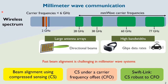Radios in 5G and beyond exploit wide bandwidths at millimeter wave carrier frequencies to support several gigabit per second data rates. Such high data rates are usually achieved through a concept called beamforming, wherein radios focus their RF signals in a particular direction.